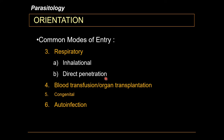More limited modes of entry include blood transfusion or organ transplantation, where people become infected by receiving blood or organs infected with parasites. Congenital transmission is also possible, but only through certain parasites.